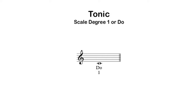The first scale degree pattern we're going to learn is for tonic. This scale degree doesn't really want to move anywhere, so it's the easiest scale degree pattern to learn. It simply goes: DO. That's all you need to know.